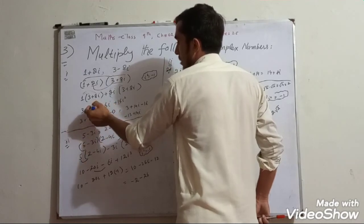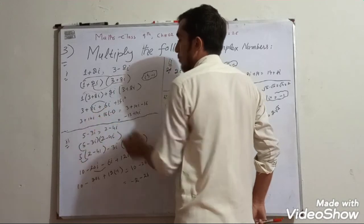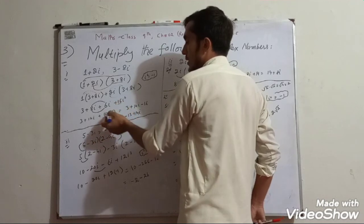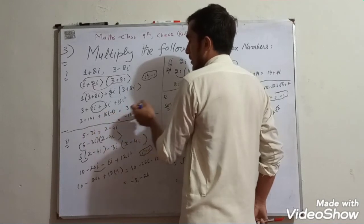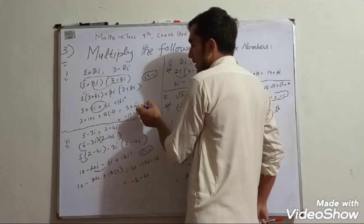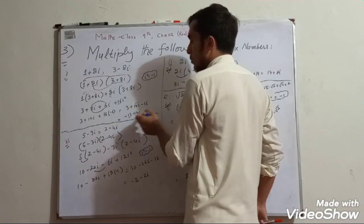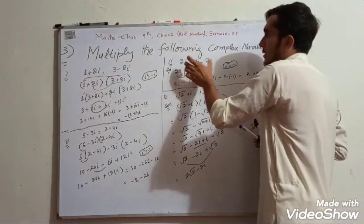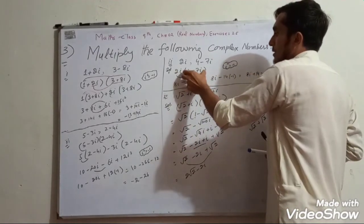8 iota plus 6 iota gives 14 iota. With iota squared equal to minus 1, the minus sign applies, giving the final simplified result.